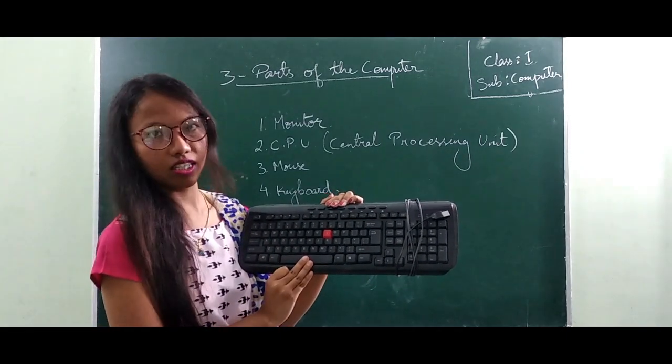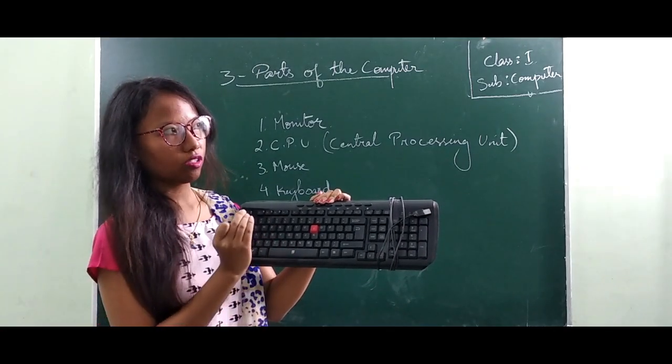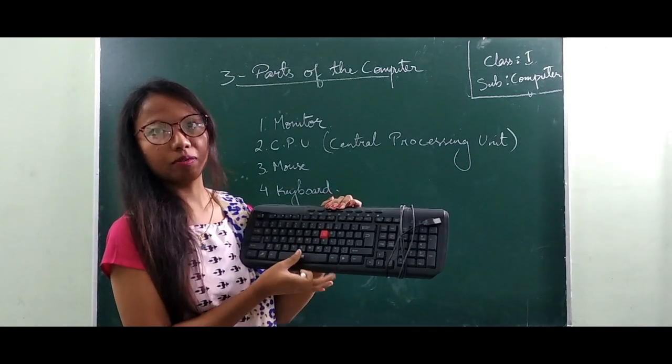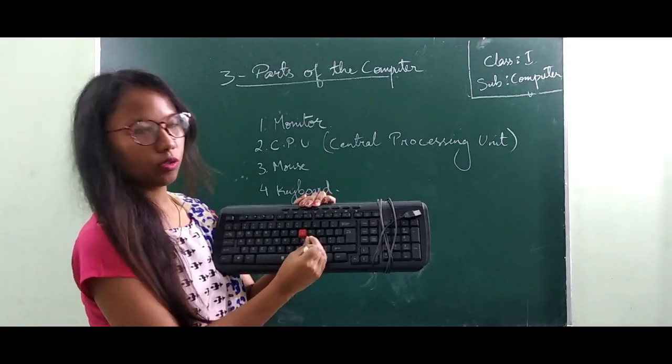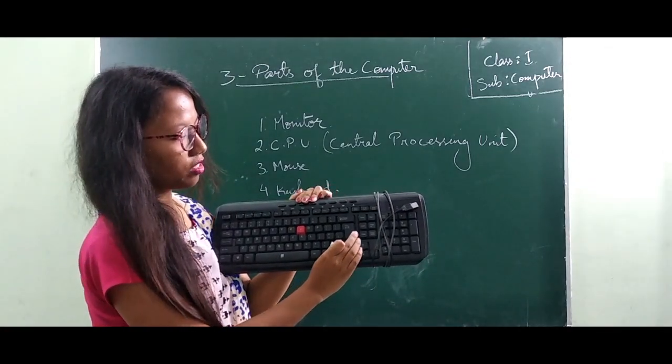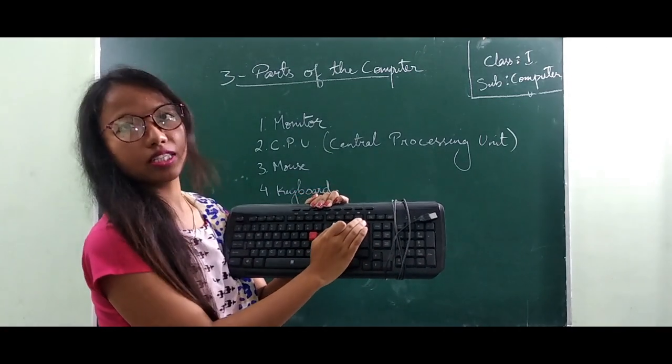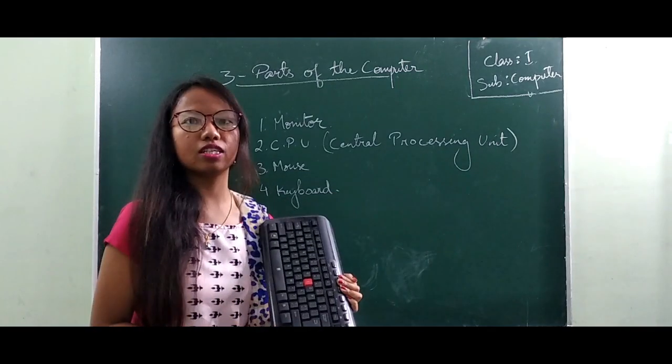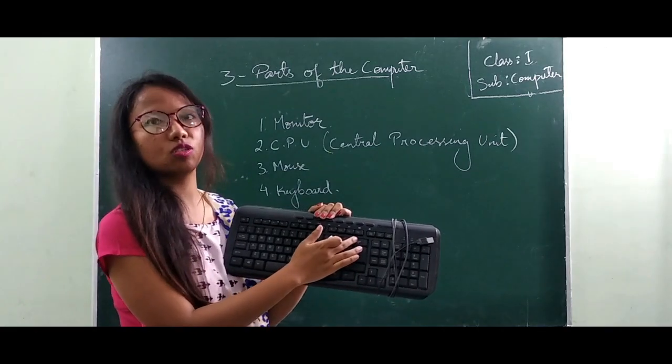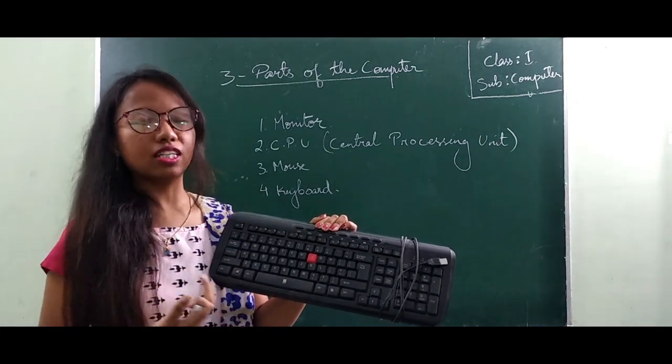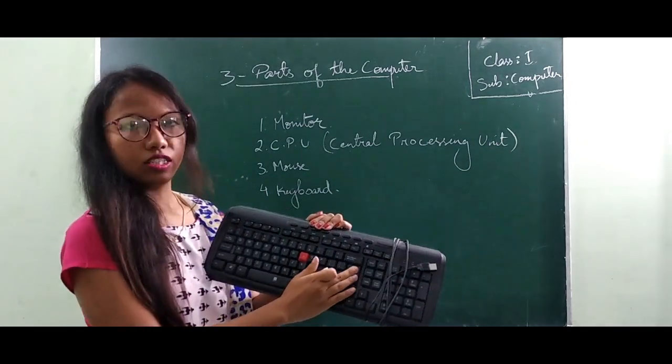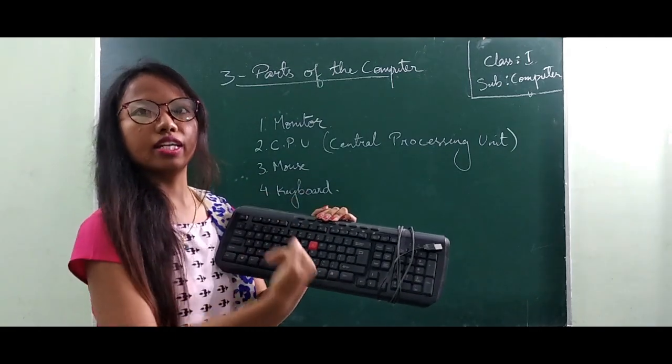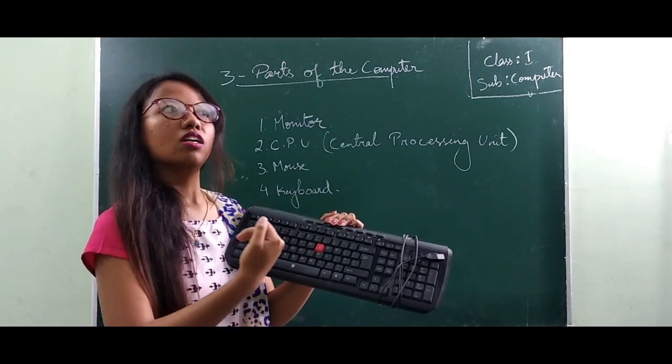For example, we have this space key which is used to give some space in our text. And then we have this enter key. This is used for deleting. If we have done any mistakes while typing, we can use this key to erase it or delete it, and it helps us to go to the next line or the next paragraph.